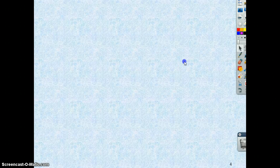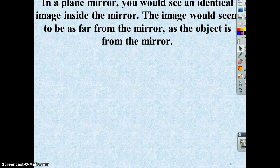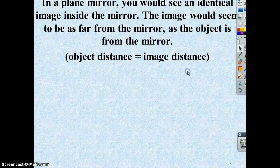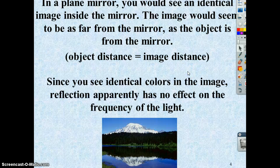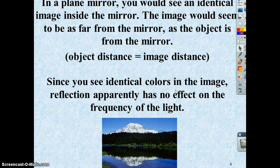So as a quick little summary here, you see an identical image inside a flat mirror. It appears to be the same distance from the mirror as the object is. You see identical colors in an image. So reflection does not affect the frequency or the wavelength of light at all.